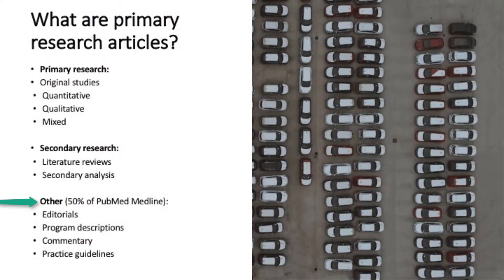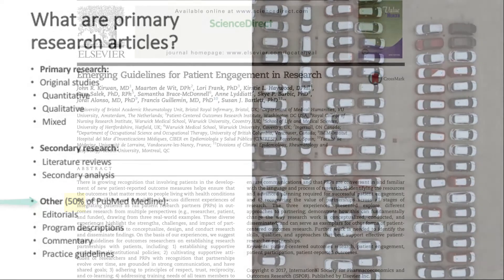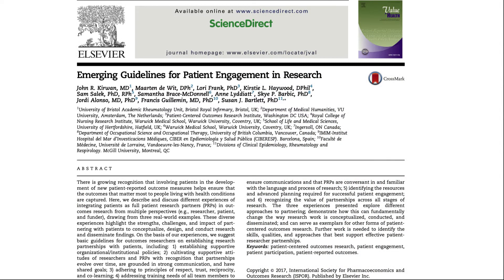There are other types of publications as well. In fact, they represent nearly half of what you find in PubMed Medline database. These will include editorials, program descriptions, commentary, and practice guidelines. In this example, in the title, you see the word 'guideline,' and then in the abstract, there's no mention of data collection or data analysis methods. So you can tell that this is the other type of publication.